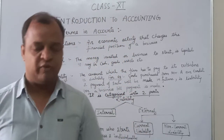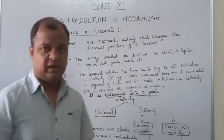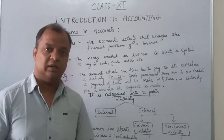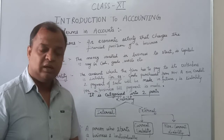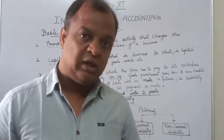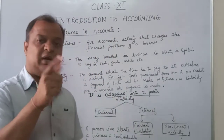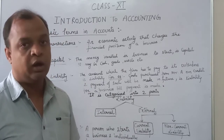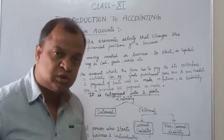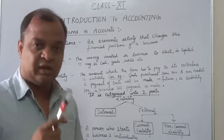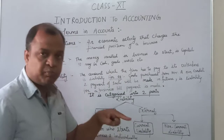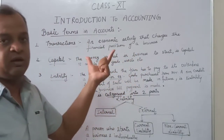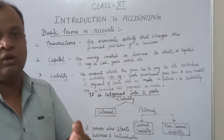Let's take an example to clarify further. Suppose Mr. A purchased goods from Mr. B. If A has purchased goods, he will also make payment. If the payment is made in cash immediately, it is a transaction. And if he purchased goods on credit — credit means Udhar — he will make the payment in the near future, which will decrease his cash position in future. But still, the financial position is being changed, so it is a transaction.